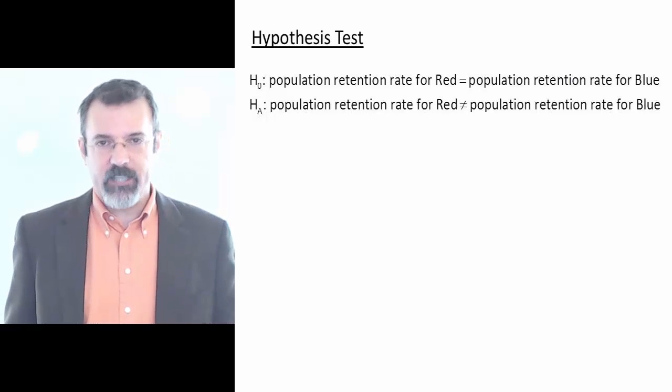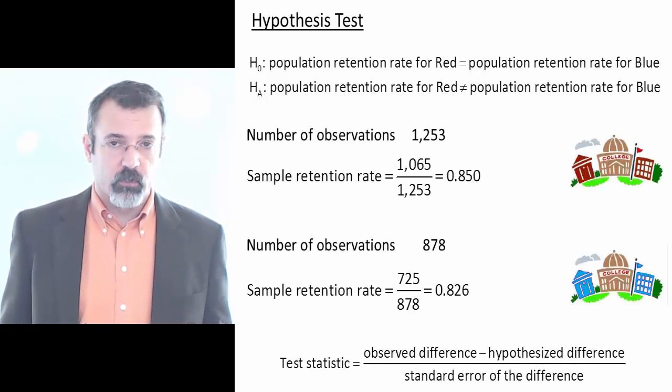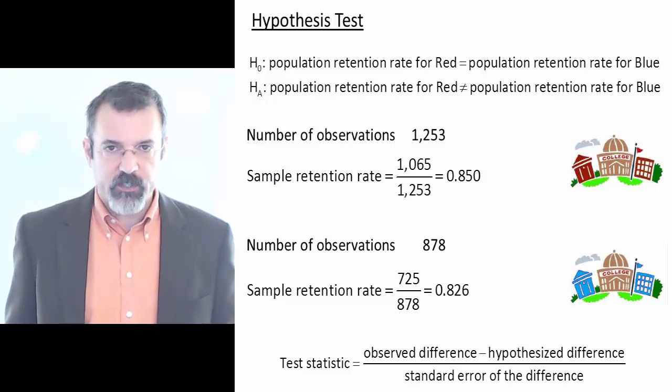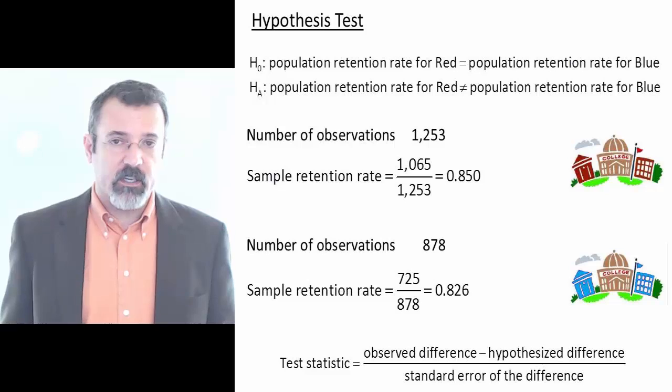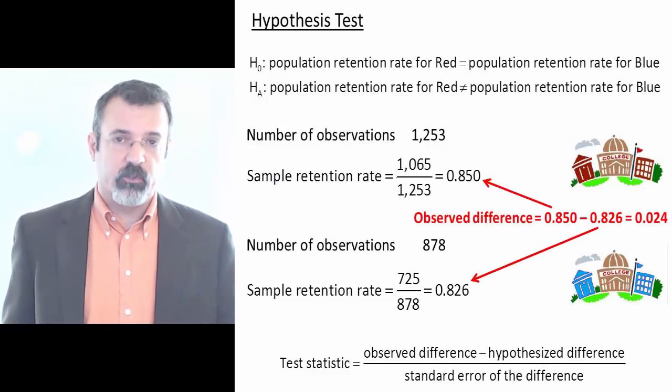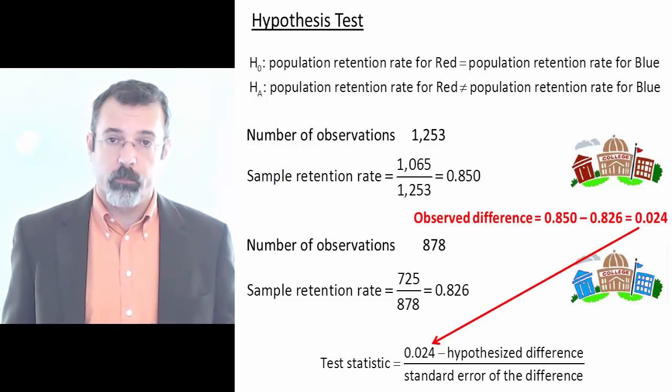So from our observed samples, we construct a test statistic. The test statistic is the observed difference minus the hypothesized difference divided by the standard error of the difference. In this case, the observed difference is the difference in the two retention rates, or 0.024.